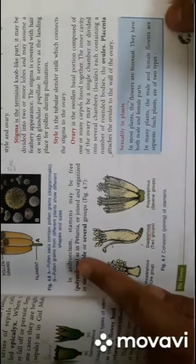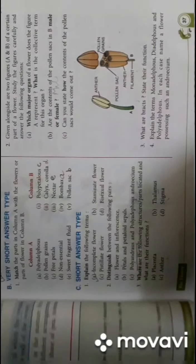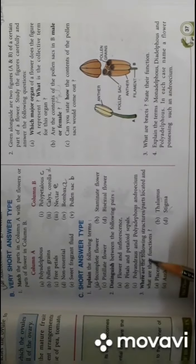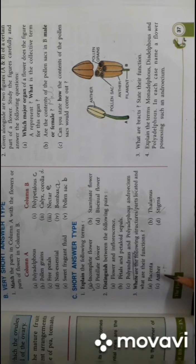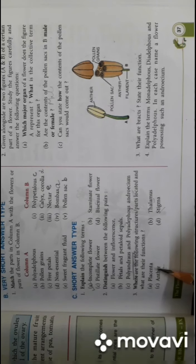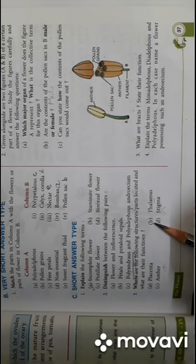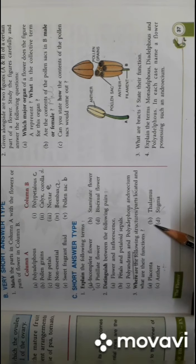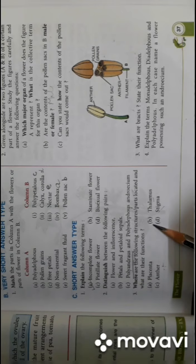Where are the following structures located and you have to give their function. Placenta - location will be inside the ovary, and function will be it attaches the ovule to the wall of the ovary. Thalamus - location will be flower, and function will be it holds the floral parts, that is sepals, petals, androecium and gynoecium.